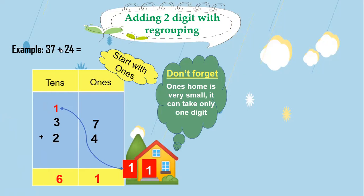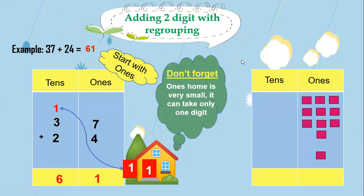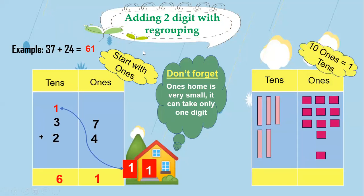Now we can represent 37 plus 24 using straws. We will write tens and ones, and represent 37 and 24. Here we have 61. The result equals 61.